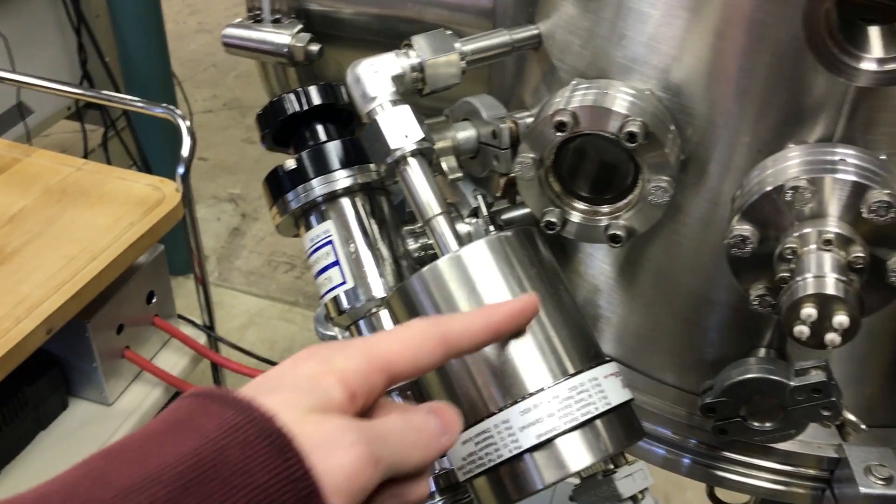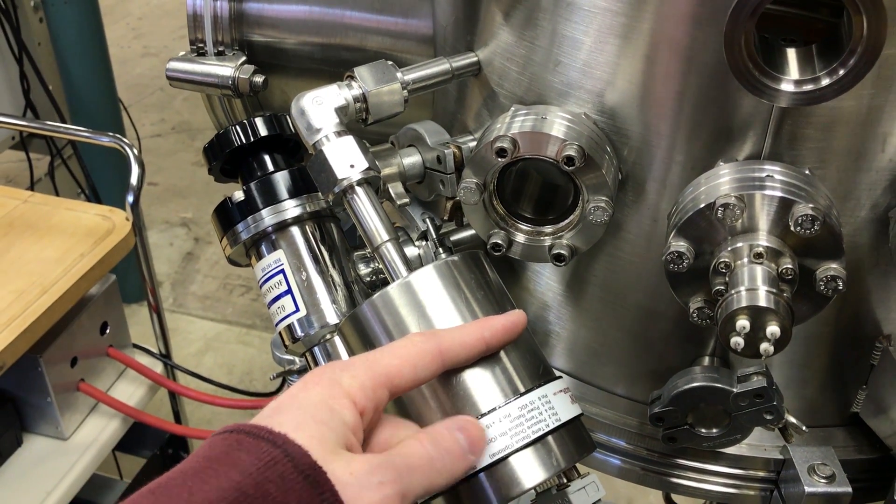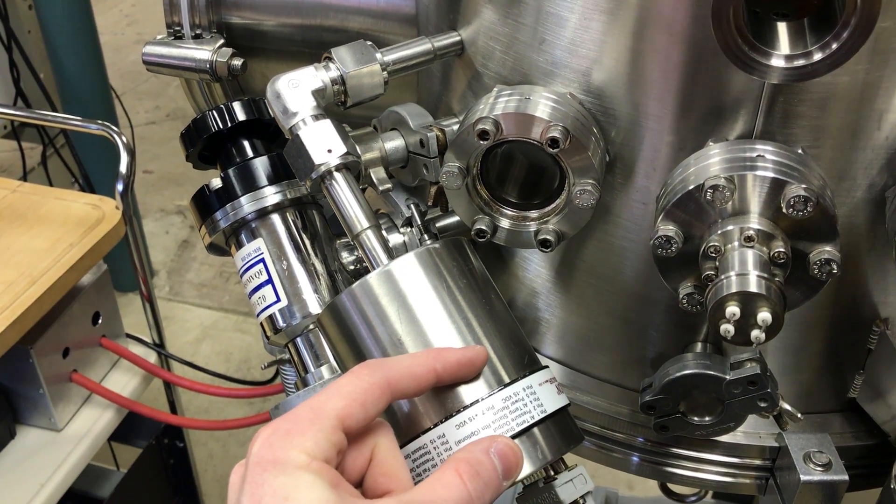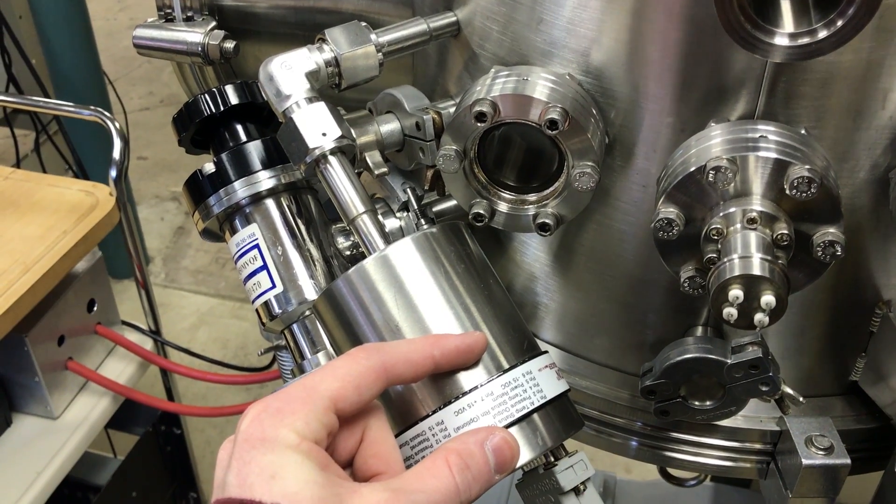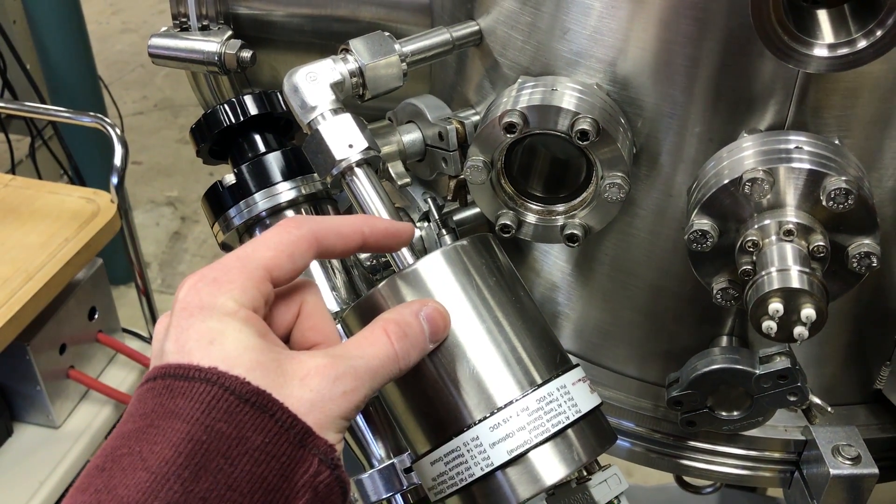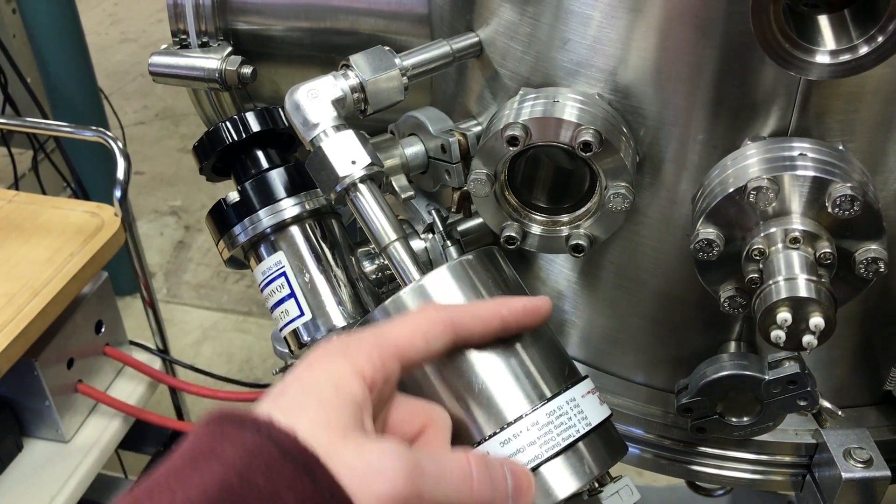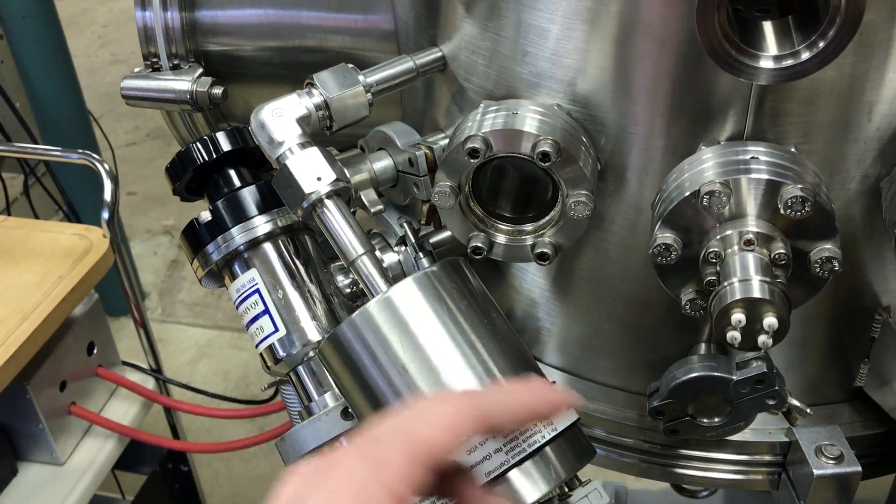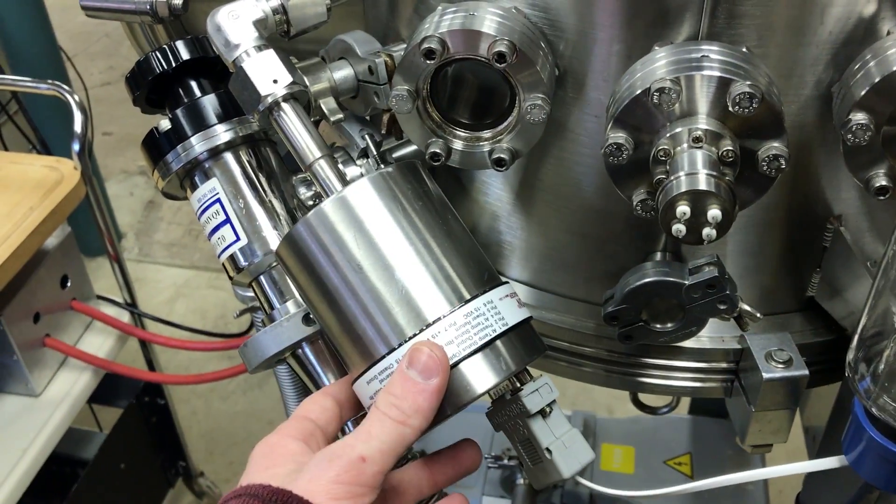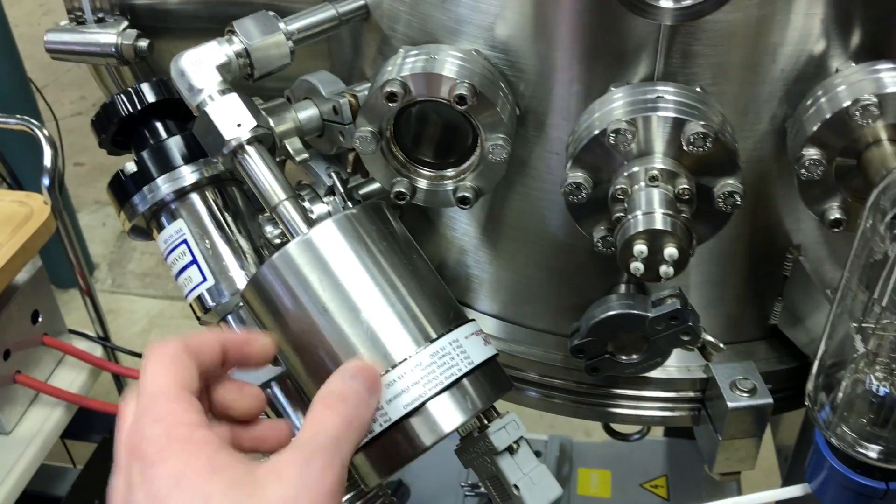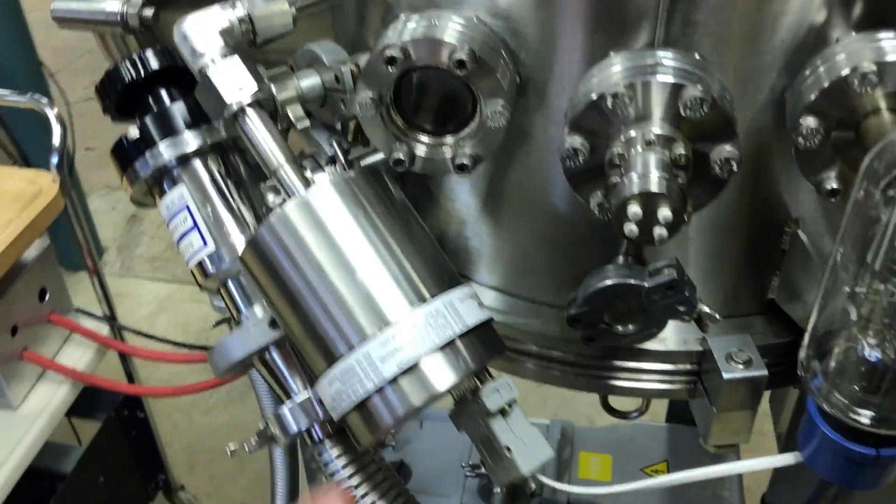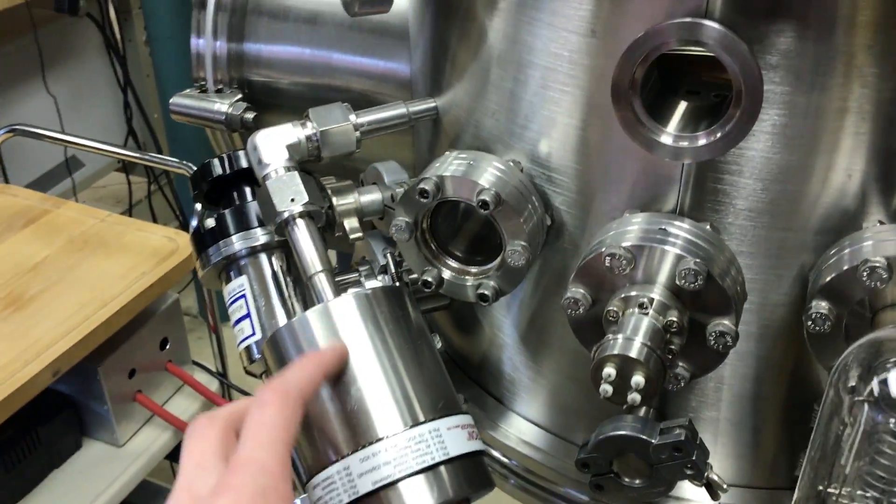This has basically got a diaphragm in the middle of it, and it's got a known vacuum on this side of it that's chemically gettered, and then it's got your vacuum chamber on this side, and then the disc will deform either way, and you can measure the capacitance change, and then therefore you can get your absolute pressure if you know the vacuum that's inside of this.